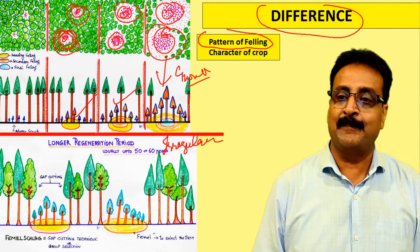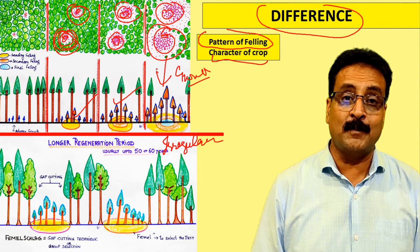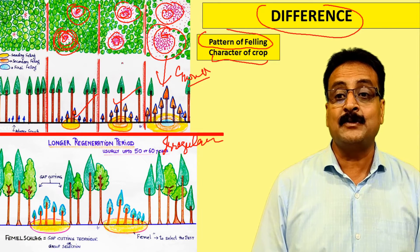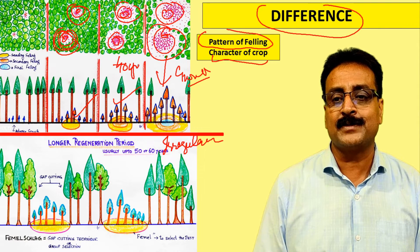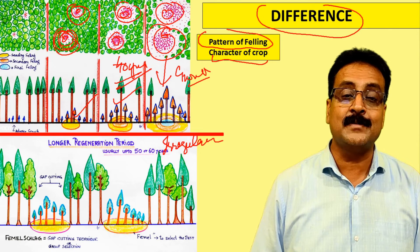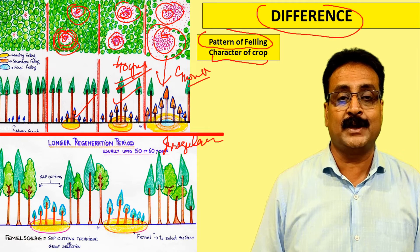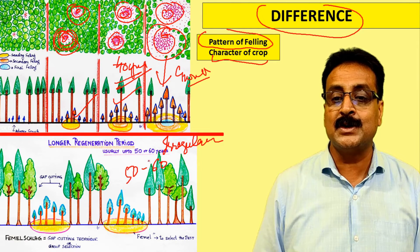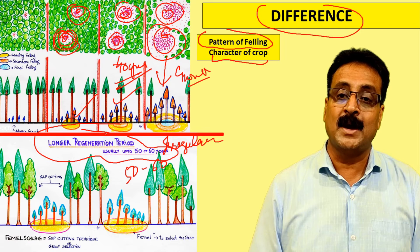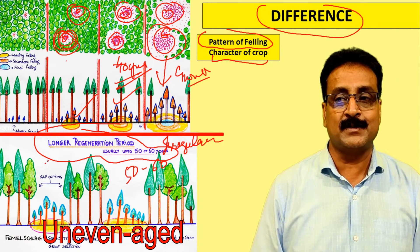Regarding character of the crop: in the group system, the crop is generally even-aged, with a regeneration period of 20 to 30 years, maximum 40 years. In the irregular shelter wood system, the regeneration felling period is more than 50 to 60 years — a longer regeneration period — making the crop uneven-aged, whereas the group system produces an even-aged crop.